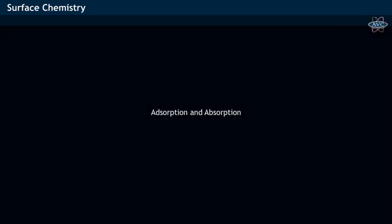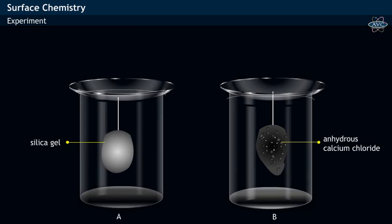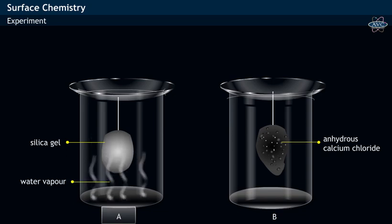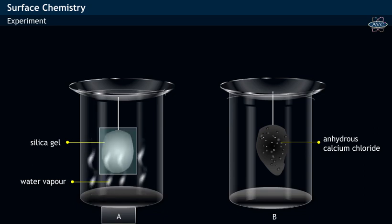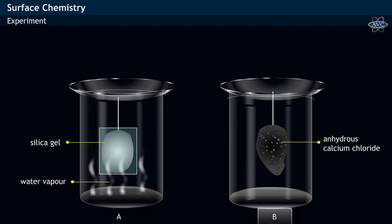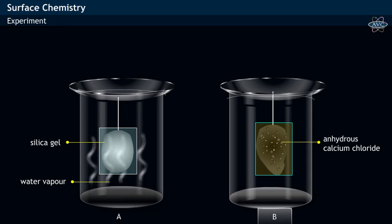We will understand the difference between adsorption and absorption phenomena using an experiment. Let us take two closed vessels, vessel A and vessel B. Vessel A contains water vapor and is provided with white colored silica gel hanging in the middle of the vessel using a thread. Vessel B contains black colored anhydrous calcium chloride hanging in the middle of the vessel using a thread.